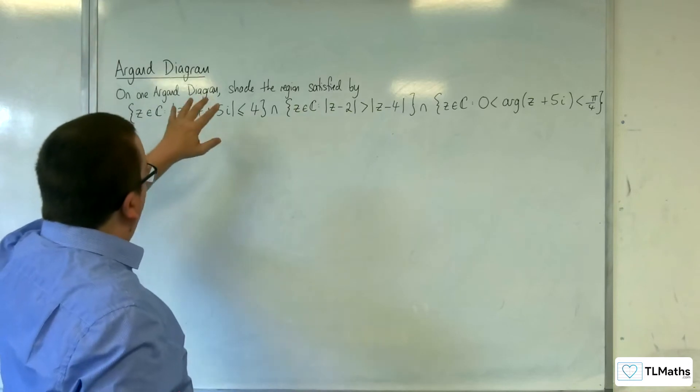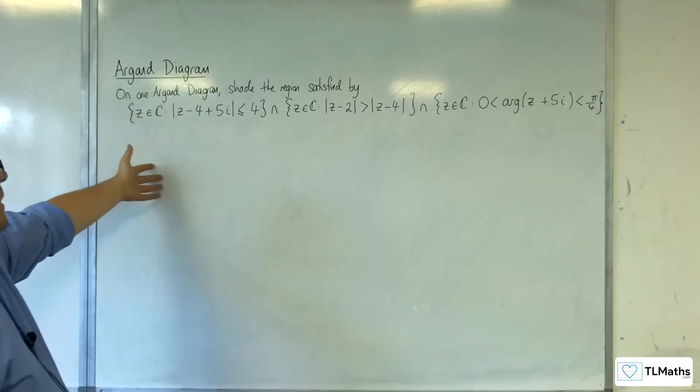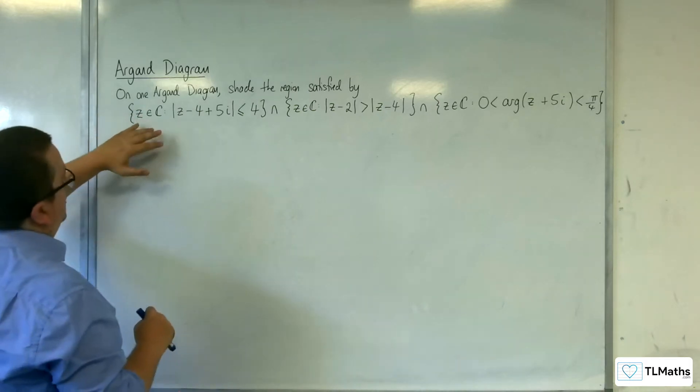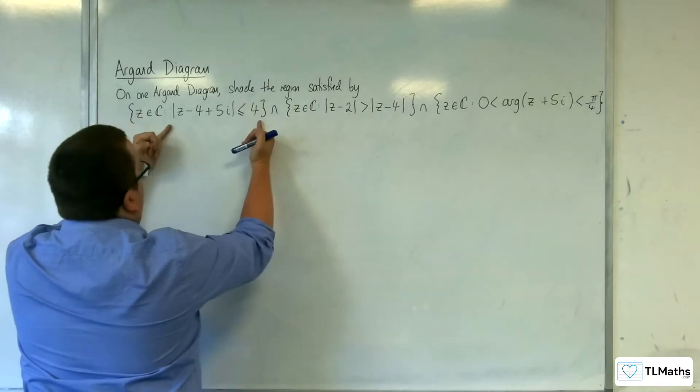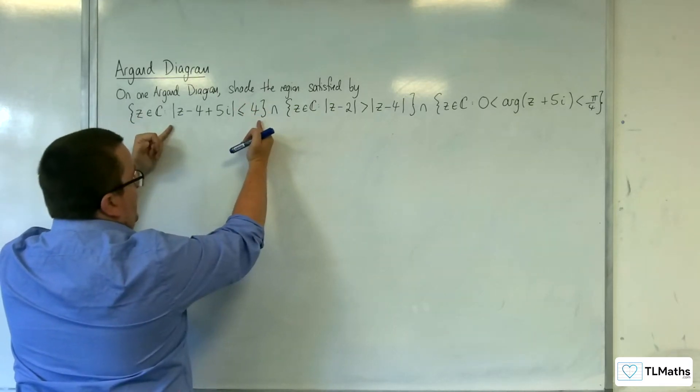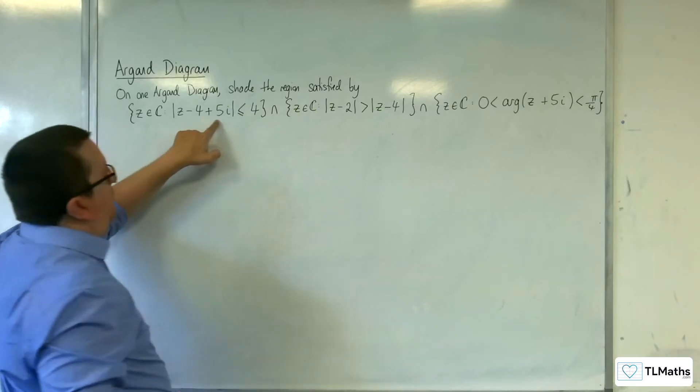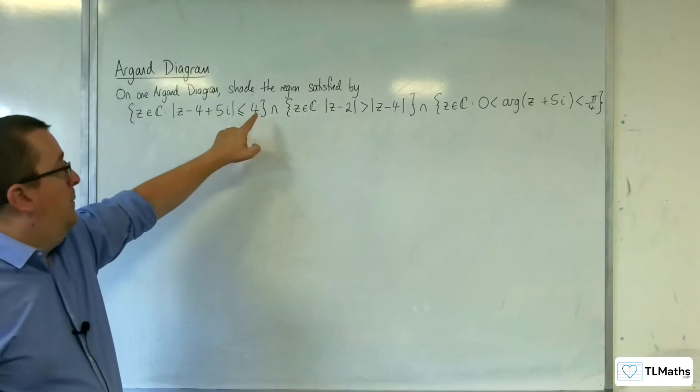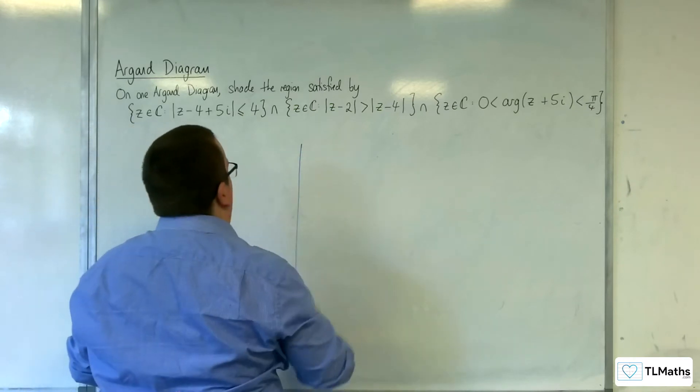Let's start off by just looking at this first bit here. It's written in set notation, but it's precisely the same thing that we've understood before. It's just saying that z is a complex number, such that the modulus of z take away 4 plus 5i is less than equal to 4. So, this is a circle, centered at 4 minus 5 with radius 4, and we're shading the inside of it. That's your first bit of information.